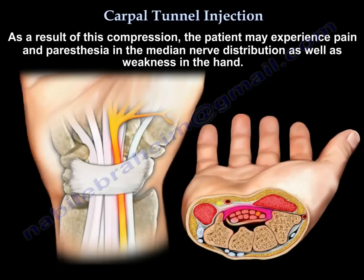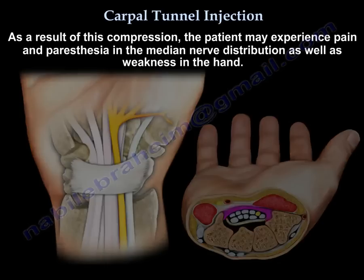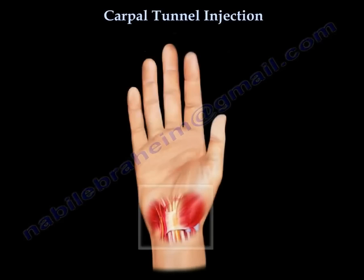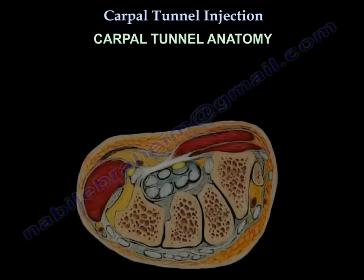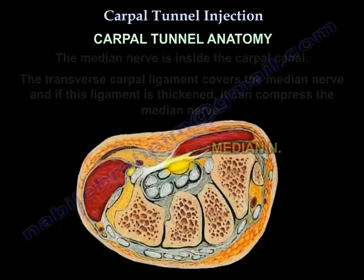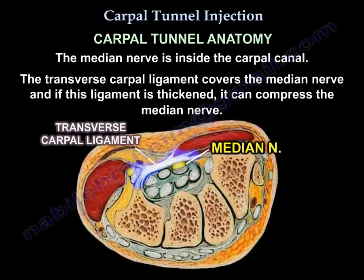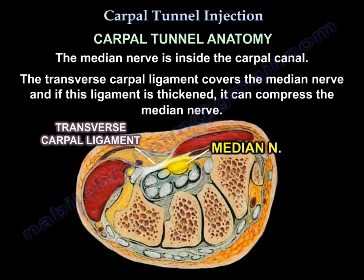As a result of this compression, the patient may experience pain and paresthesia in the median nerve distribution, as well as weakness in the hand. This is a cross-section anatomy at the wrist. You can see the median nerve inside the carpal canal. You can also see the transverse carpal ligament covering the median nerve, and if this ligament is thickened, it can compress the median nerve.